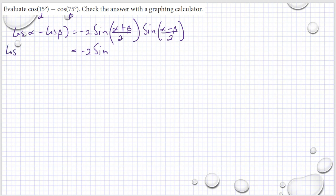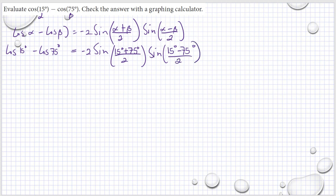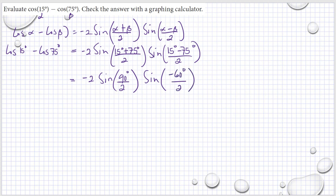So cosine(15°) − cosine(75°) = −2·sine[(15° + 75°)/2]·sine[(15° − 75°)/2]. That gives us −2·sine(90°/2)·sine(−60°/2), which is −2·sine(45°)·sine(−30°).